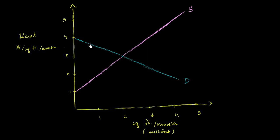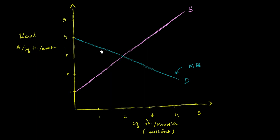Here in blue we have the demand curve. You see as the price is high, the demand for square footage is low, and as the price is low, the demand for square footage is higher. But what I really want to focus on in this video is viewing the demand curve as the marginal benefit curve. When that first incremental square foot is added to the market, it has a huge marginal benefit — people were desperate to get an apartment, to get someplace where they could rent and live. And then the marginal benefit for every incremental square foot starts to go down.